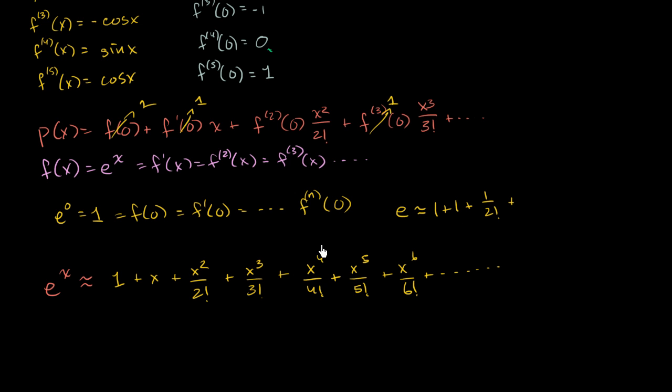So it'll be 1 plus 1 plus 1 over 2 factorial, plus 1 over 3 factorial, plus 1 over 4 factorial, so on and so forth, all the way into infinity. And you could also view this as 1 over 1 factorial, 1 over 1 factorial.